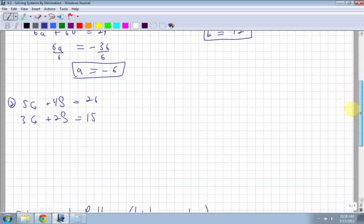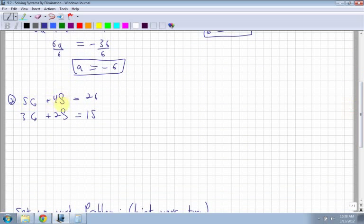So at some point in time, even with elimination, you're going to have to substitute your value back into one of the equations. Again, it doesn't matter which one. Let's look at another example here. So I get 5g plus 4s. I put my s's like that because otherwise they look like 5s. Equals 26. And 3g plus 2s equals 15.